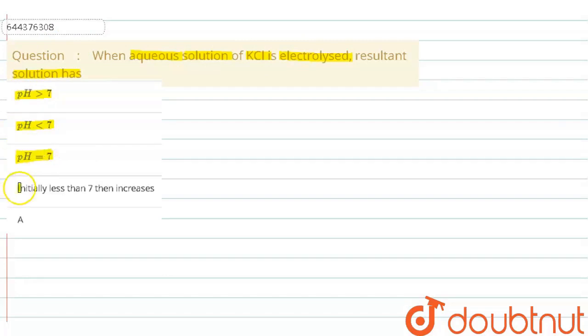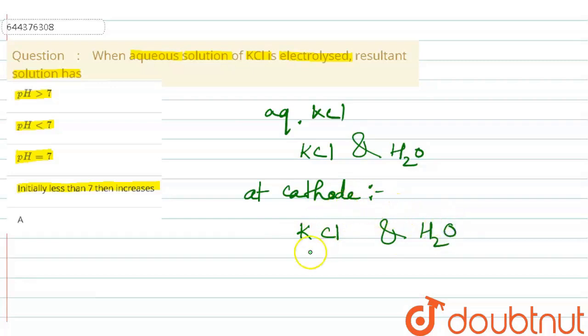We have a solution of aqueous potassium chloride, which means we have potassium chloride and water. So at cathode, what will happen? We have potassium chloride and water, giving us potassium plus ions and water at the cathode.